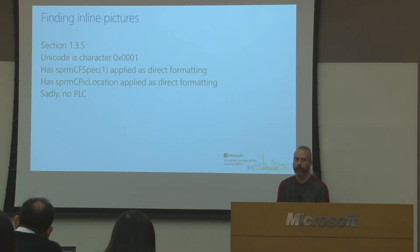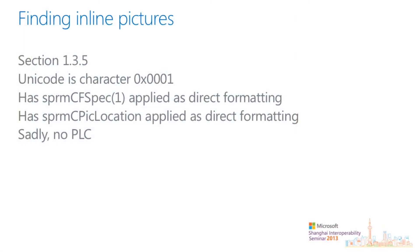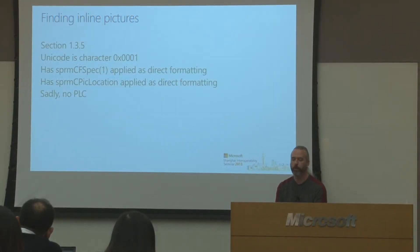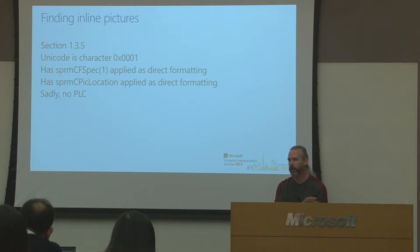For inline pictures, it's very similar to floating pictures, but the character you'll find in the Word document stream is hex 0001. You'll still have the same CFSpec property modifier applied. You'll also have a CPIC location modifier applied using direct formatting. However, for inline pictures there will be no PLC anchored off the FIB to give a collection of where all these pictures are — they are all inline within the text.